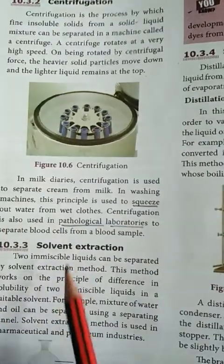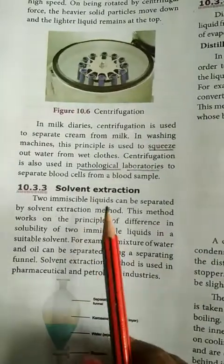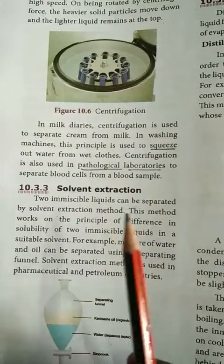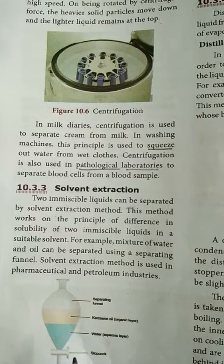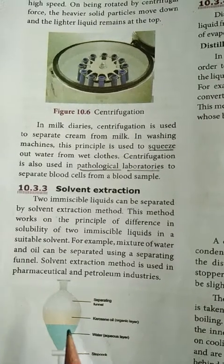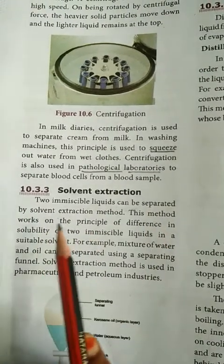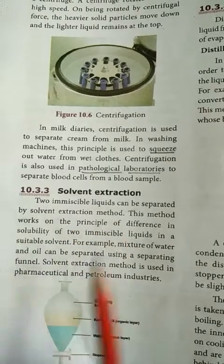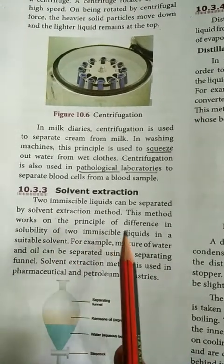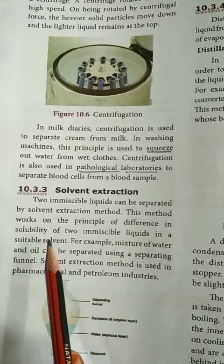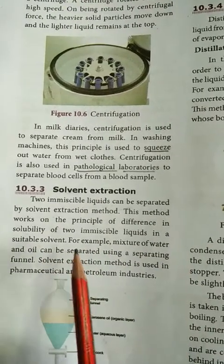Next, let us see solvent extraction. Two immiscible liquids — immiscible liquid means liquids that do not mix with each other, for example oil and water — can be separated by the solvent extraction method. This method works on the principle of difference in solubility of two immiscible liquids in a suitable solvent.